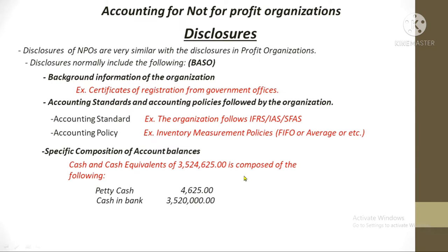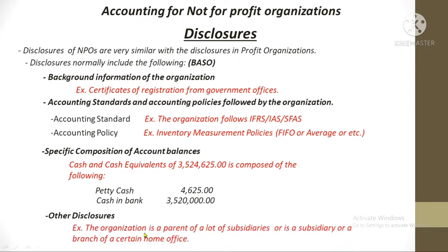O stands for other disclosures — there are many examples, but one is that the organization must disclose whether it is a parent of subsidiaries, a subsidiary of a parent, or a branch of a home office. That covers BASSO, which is normally the content of disclosures for both profit and not-for-profit organizations. Now let's talk about the disclosures unique to NPOs.